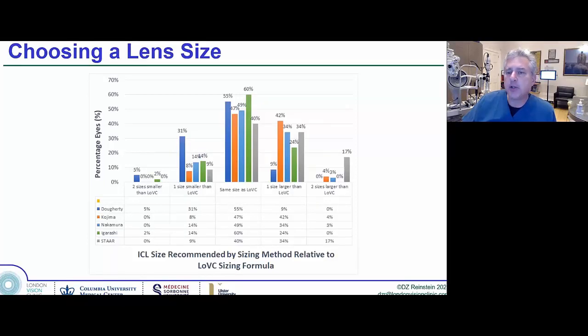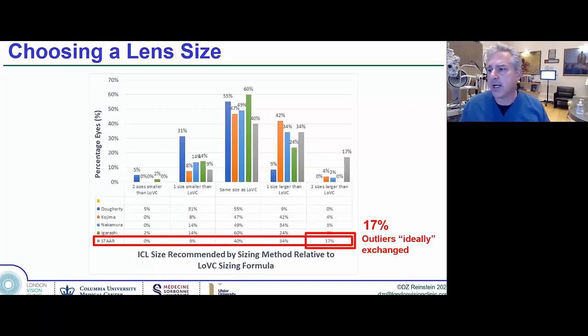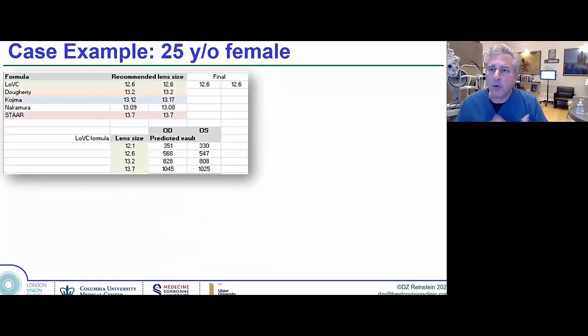I'll just single out the Ocos, which is obviously the oldest equation. 17% of the time, the Ocos website recommended a size that was two sizes larger than the London Vision Clinic formula did. Where does that apply?